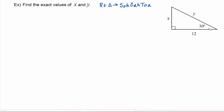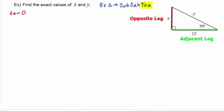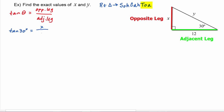Relative to the 30-degree angle that we are given, side x would be the opposite leg and the side 12 would be the adjacent leg. So if we're using opposite leg and adjacent leg, that means we're using tangent. The tangent of an angle is going to equal the opposite leg divided by the adjacent leg. In our case, tangent of 30 degrees is going to equal x, which is the opposite leg, divided by 12, which is the adjacent leg.